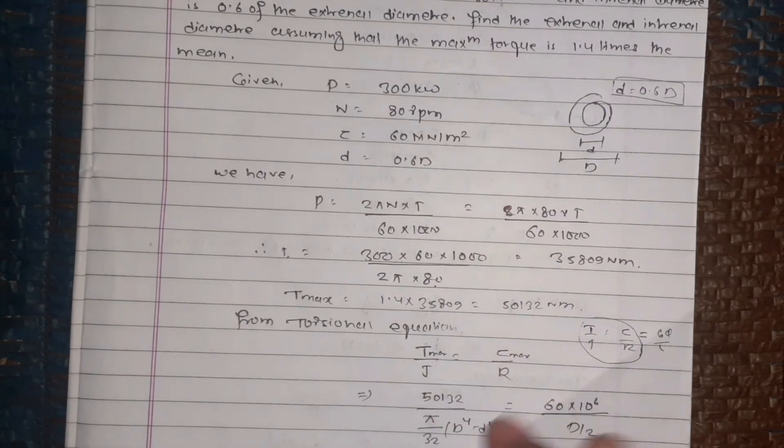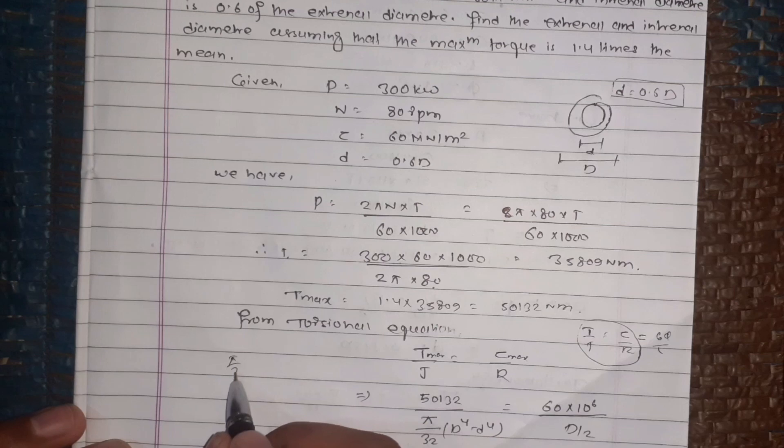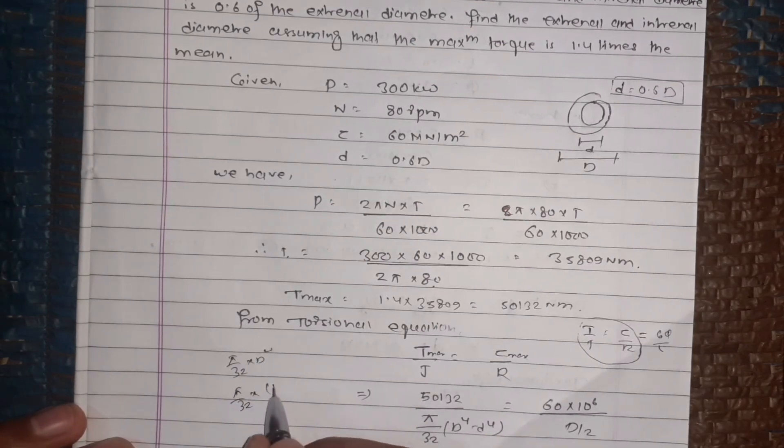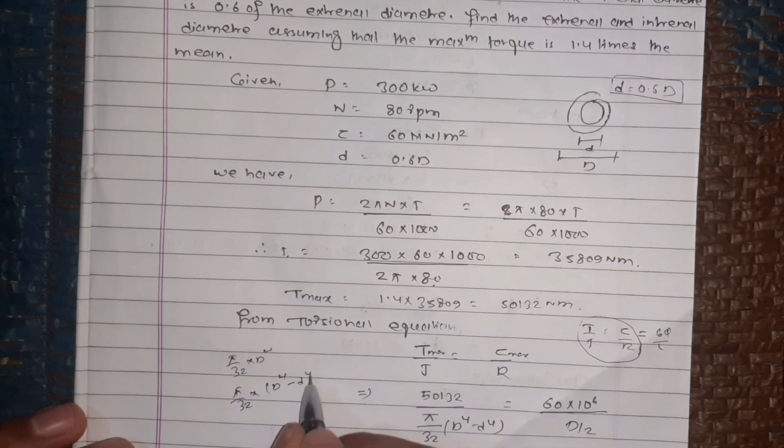J is equal to the polar moment of inertia. T equals tau by J is equal to pi by 32 into capital D power 4 minus small d power 4.